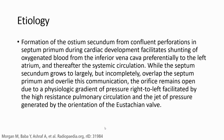Regarding embryology: formation of the ostium secundum from confluent fenestration in septum primum during cardiac development facilitates shunting of oxygenated blood from the inferior vena cava, directed toward the left atrium, and then into the systemic circulation. The septum secundum grows to largely but incompletely overlap the septum primum and overlies this communication. The foramen ovale remains open due to a physiologic gradient of pressure, left facilitated by the high resistance pulmonary circulation and the jet of pressure generated by the orientation of the Eustachian valve.